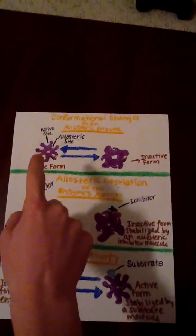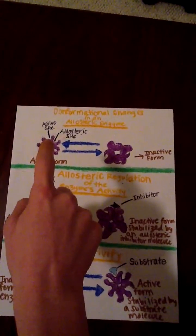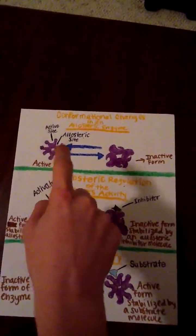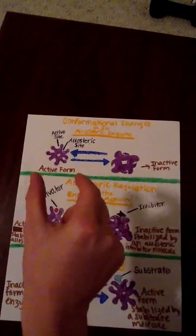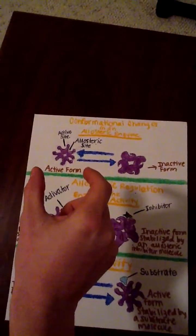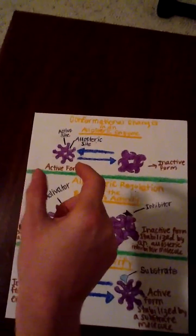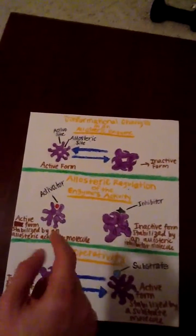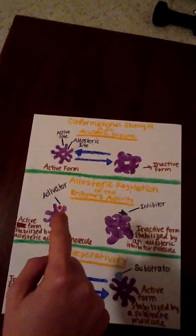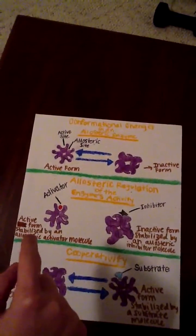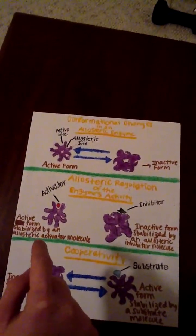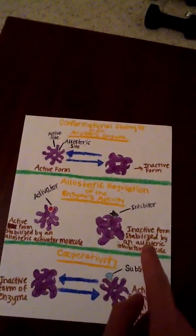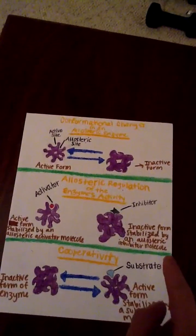Up here, this space would be the active site, and this right here is the allosteric site. This part as a whole would be the active form, and over here would be the inactive form. Down here we have the activator — this is the active form stabilized by an allosteric activator molecule. And over here we have the inhibitor — this is the inactive form stabilized by an allosteric inhibitor molecule.